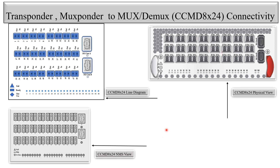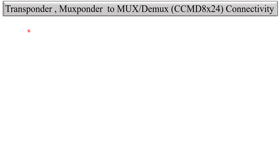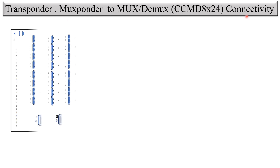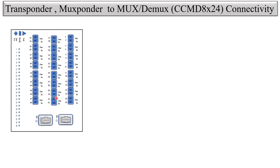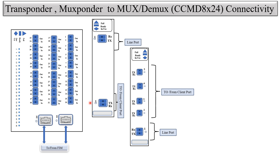Now let's see the transponder and muxponder to CCMD8 Cross 24 connectivity. The CCMD8 Cross 24 has ports 101/102 connected towards the line side via the MPU port. For transponders, every client port has a corresponding line port. The line port is always used to connect to the channel of the CCMD8 Cross 24. Similarly, the muxponder line port is also connected to the CCMD8 Cross 24.